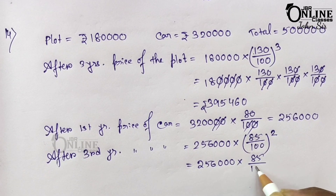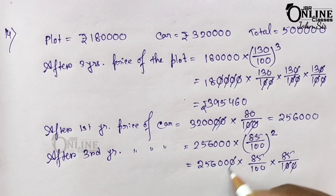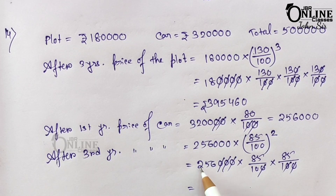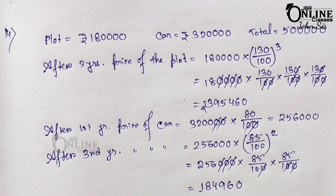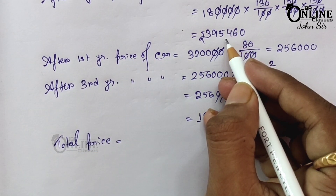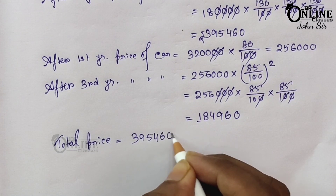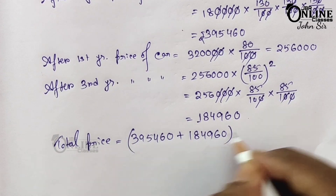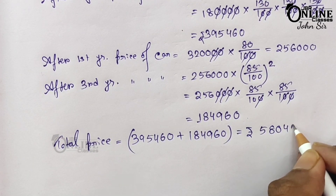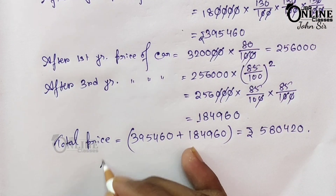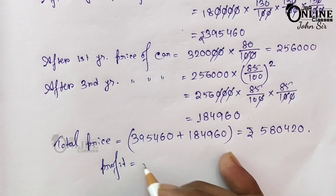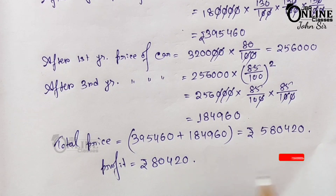Calculating: 256 × 85 × 85 ÷ 10 = 1,84,960. So the price of the car after three years is rupees 1,84,960. Total selling price = 3,95,460 + 1,84,960 = rupees 5,80,420. The cost price was 5 lakh, so profit = 5,80,420 − 5,00,000 = rupees 80,420 as your answer.